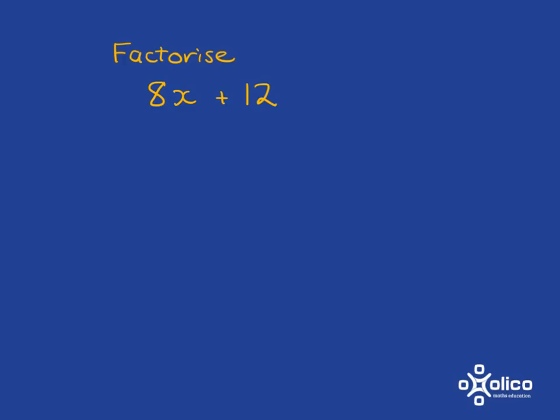what you're going to do is have a look and see, is there a number that divides into 8x as well as into 12? Now obviously 2 will divide into 8 and also into 12, but that's not the highest common factor. You'll also have 4 that can divide into 8 and into 12, and that is the highest number that will divide into both of them.